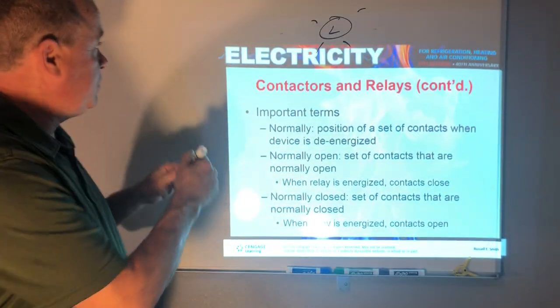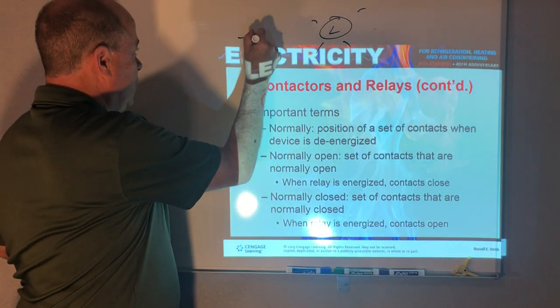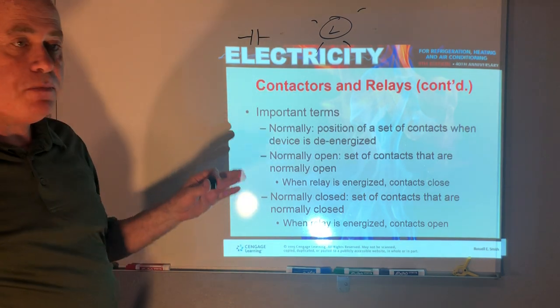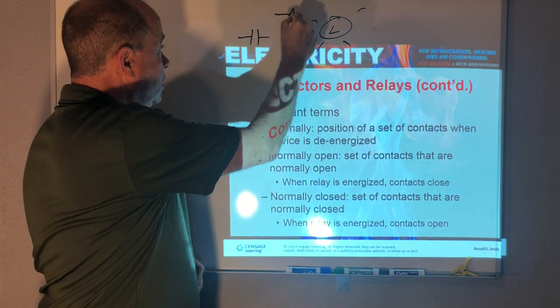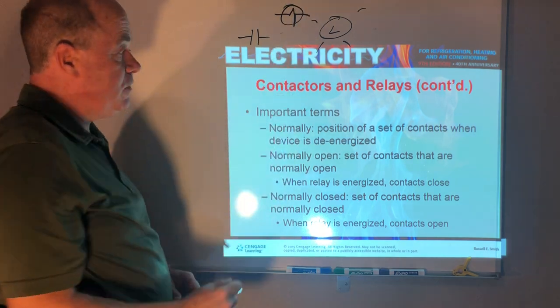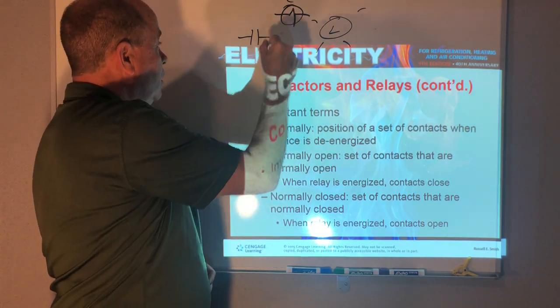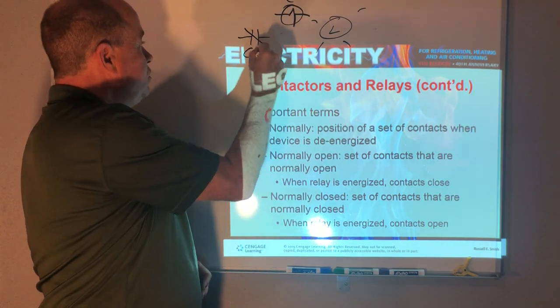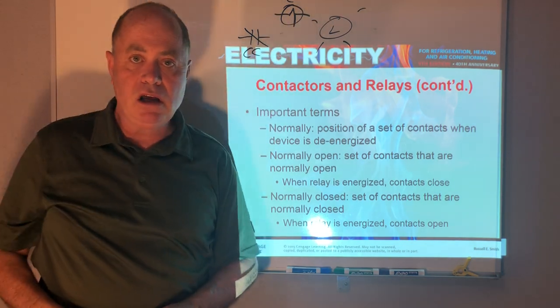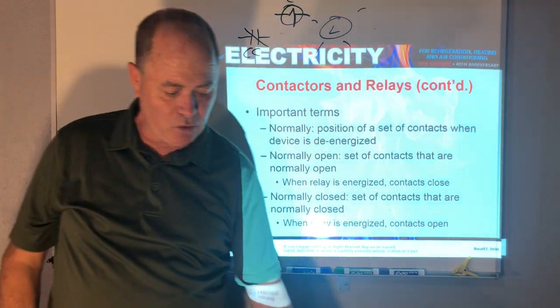So normally open set of contacts, the symbol for that would be this. So it's open. Then if you energize the coil of the contactor coil, then the contact closes and sends power like to a compressor of sorts.